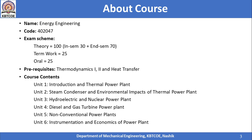Unit 1 is an introduction to the subject and thermal power plants. Unit 2 covers steam condensers and environmental impacts of thermal power plants. Unit 3 focuses on hydroelectric and nuclear power plants. Unit 4 covers diesel and gas turbine power plants. Unit 5 is about non-conventional power plants. So the first 5 units cover various types of power plants, and Unit 6 is dedicated to the instrumentation and economics of power plants.